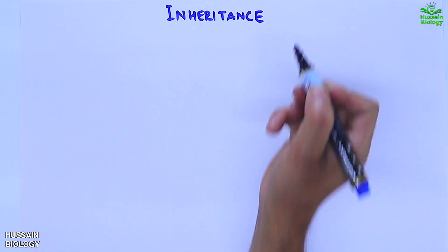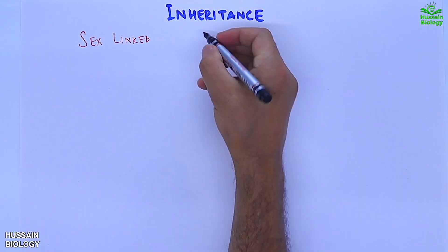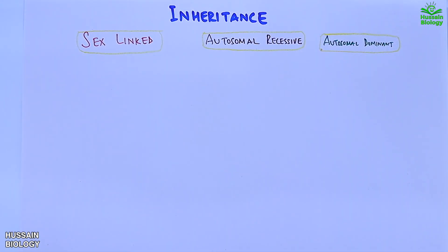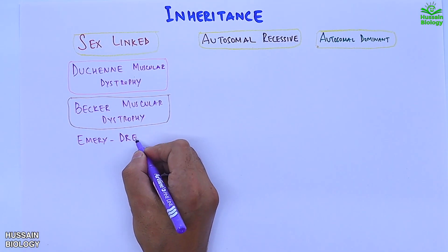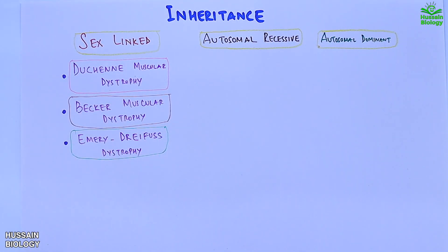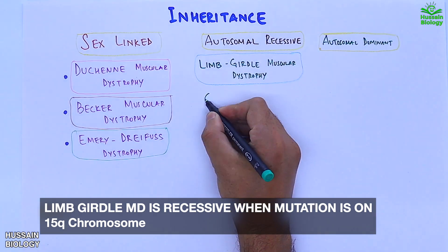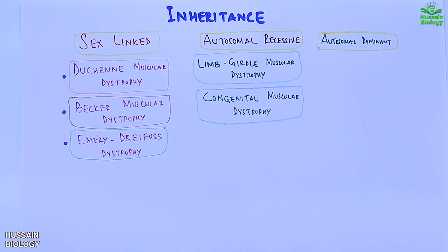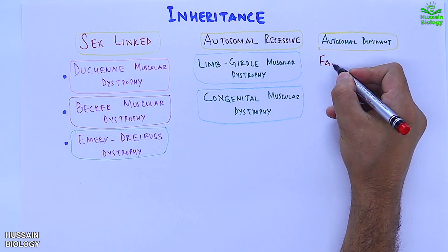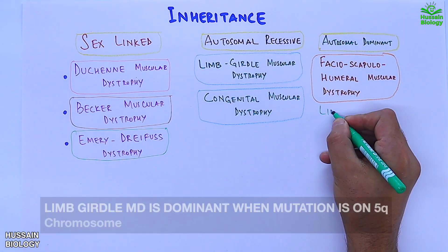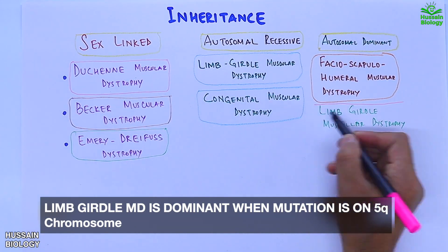The inheritance of these affected genes follows the pattern of X-linked inheritance, autosomal recessive inheritance, or autosomal dominant inheritance. In X-linked inheritance we have Duchenne muscular dystrophy, Becker's muscular dystrophy, and Emery-Dreifuss muscular dystrophy. In autosomal recessive we have Limb-girdle muscular dystrophy (15q chromosome) and congenital muscular dystrophy. In autosomal dominant disorders we have facioscapulohumeral muscular dystrophy (FSHMD) and Limb-girdle muscular dystrophy with the gene on 5q chromosome.